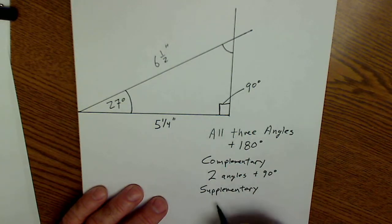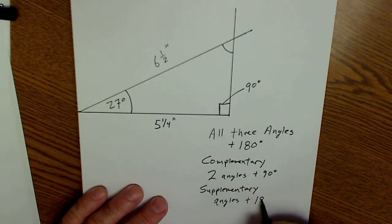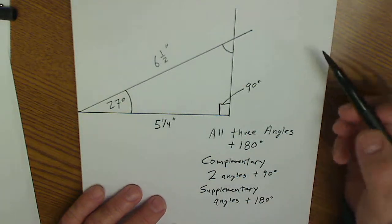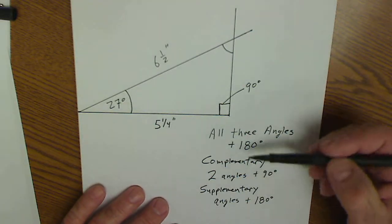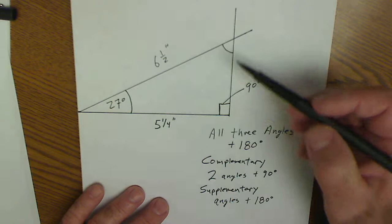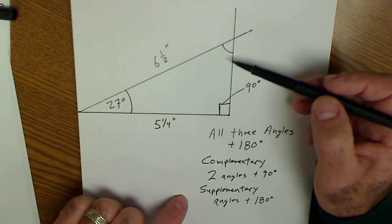Supplementary are angles that add to 180. So those are just some math terms that you should incorporate in your measurement: right triangle, complementary, supplementary.